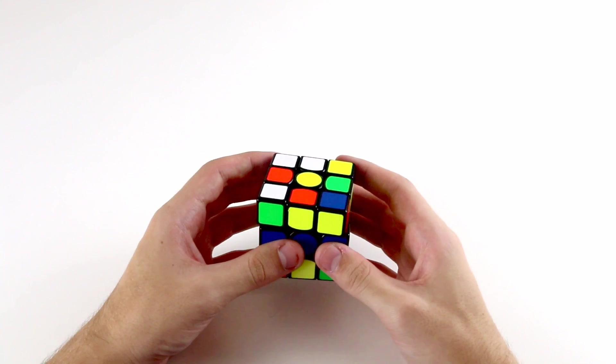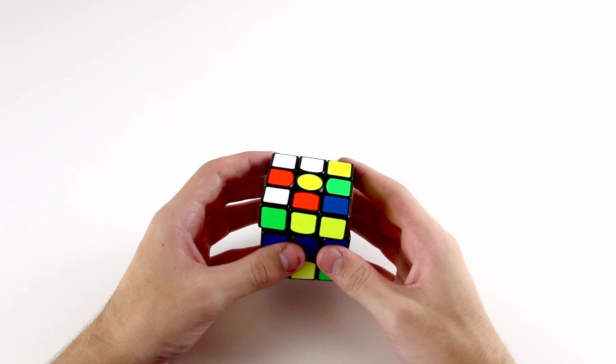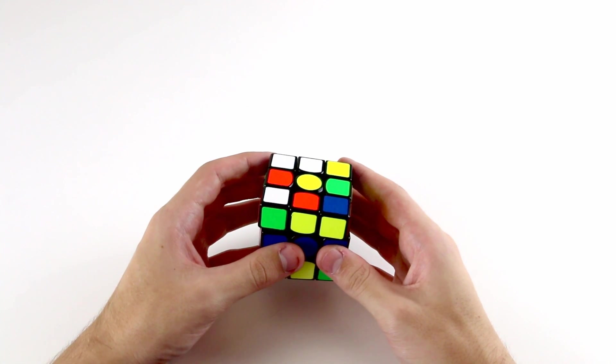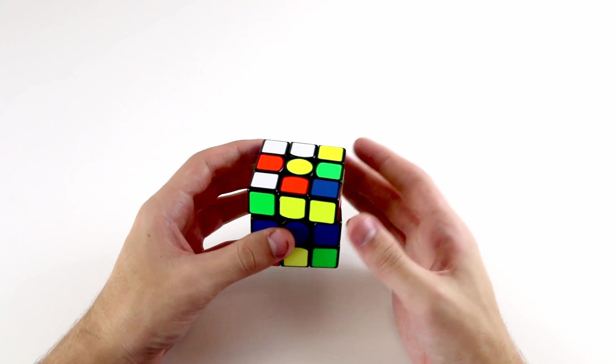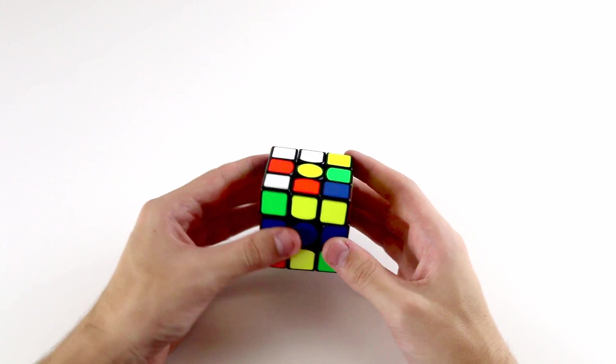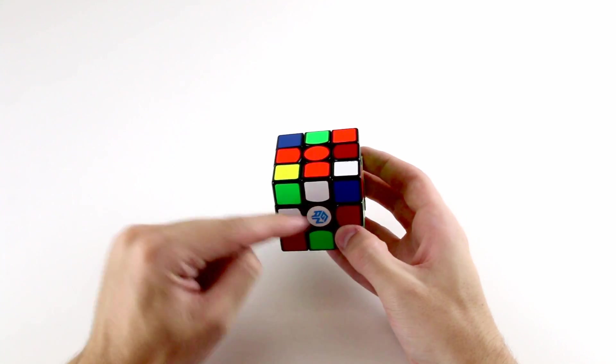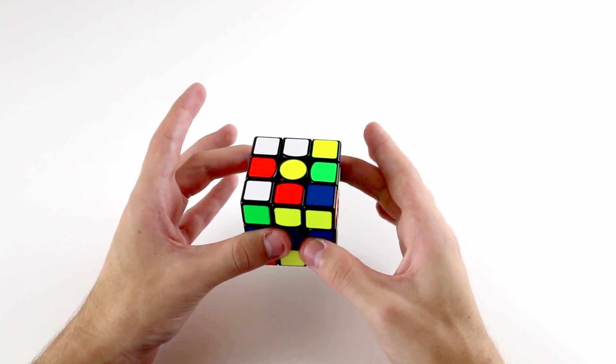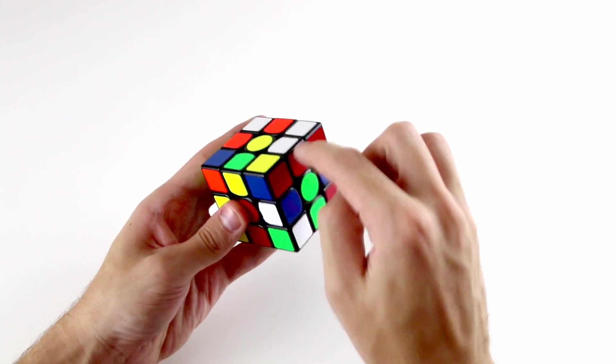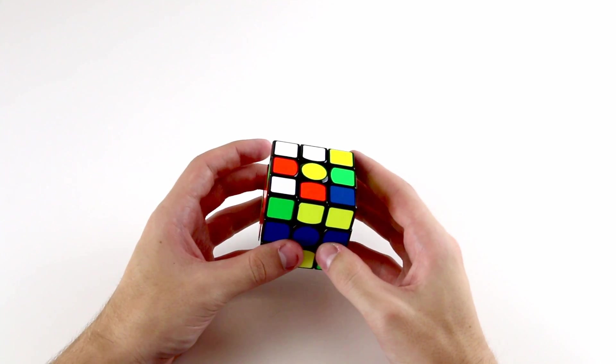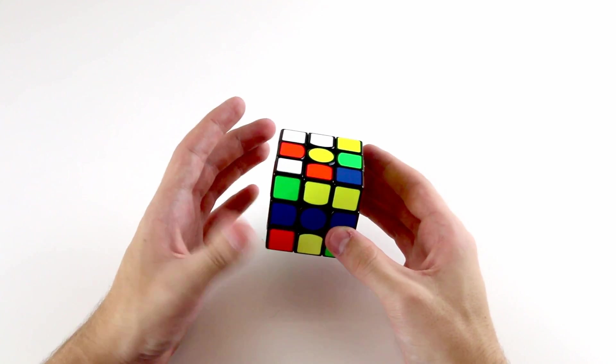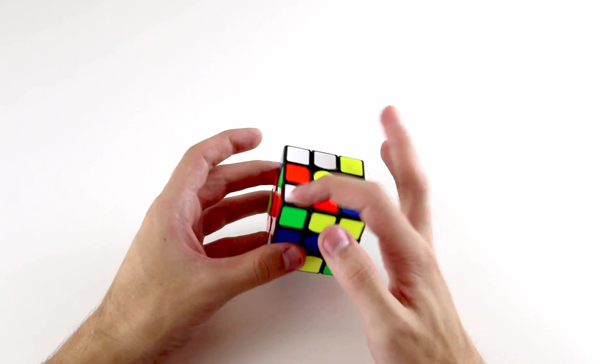To start out and actually get used to this technique, I'd recommend trying to do it on scrambles where you have easy crosses. So scramble your cube, and if your cross is difficult, then maybe solve one or two cross edges first and then inspect from there and try and plan the rest of the cross as well as your first F2L pair. And then once you get good at this, try and plan three cross pieces and an F2L pair, and then plan your entire cross solution and the first pair.